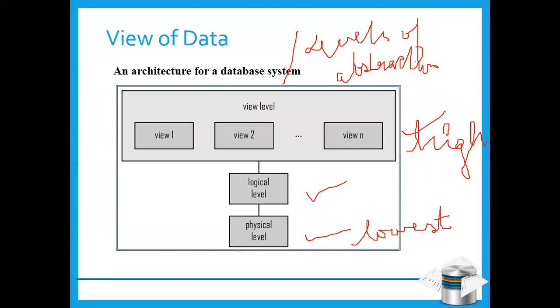To quickly recap: you have three levels — the physical level, which describes how data is stored; the logical level, which covers data types, record structures, and relationships; and the view level, which is the highest level of abstraction and represents what the user sees.